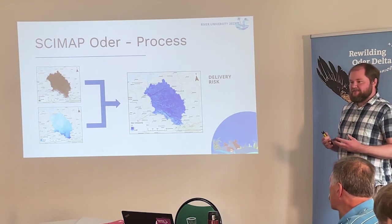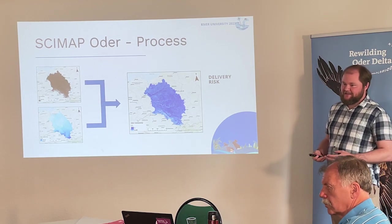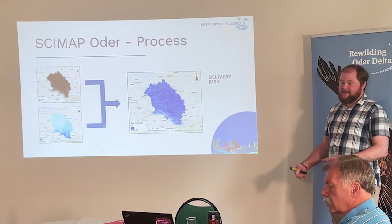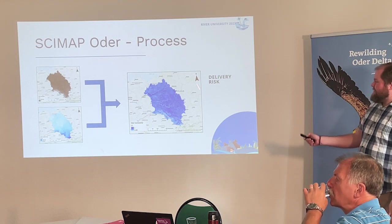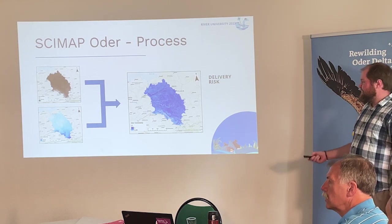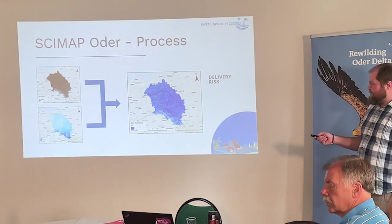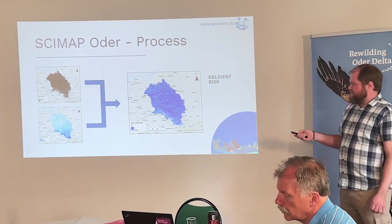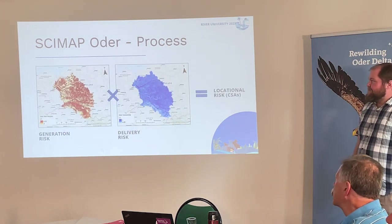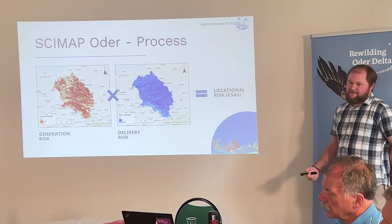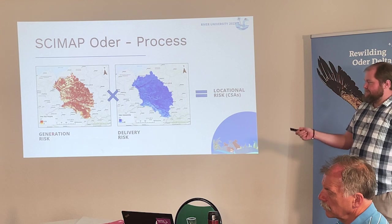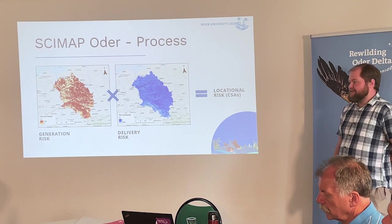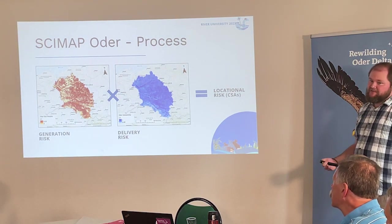We then need to think about the risk of hydrological pathways, combining the elevation and precipitation inputs. From the elevation model, we can understand which parts of the landscape are likely to generate overland flow through what's called a topographic wetness index, and we weight that by the distribution of rainfall. The combination of these two gives us a map of hydrological connectivity — every point in the landscape gets a value between 0 and 1, showing the likelihood that it is connected by a continuous overland flow path to the receiving water. This is our delivery risk, called the network index. The final step of SCIMAP is simply a multiplication of generation risk and delivery risk to give us locational risk and identify critical source areas.